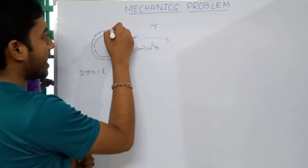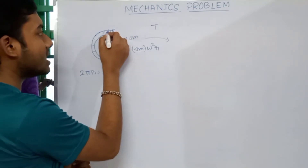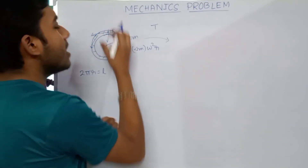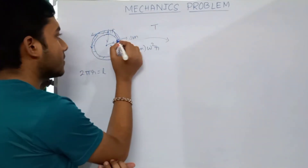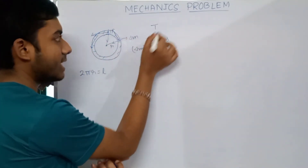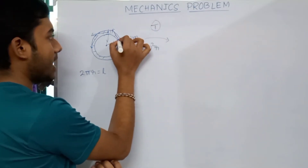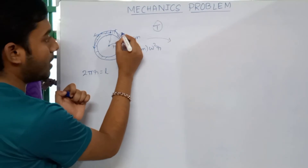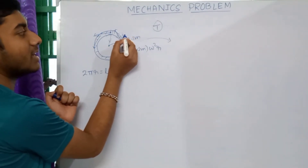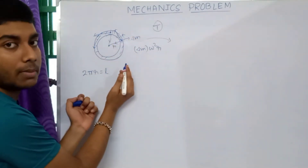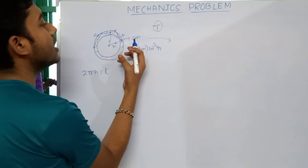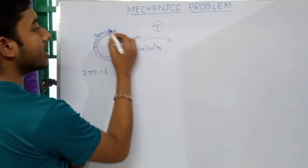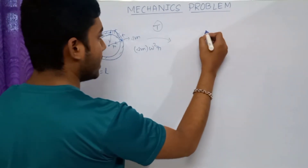The tension is directed tangentially because it is an intermolecular force. For this mass, the upper part of the string attracts the lower part, so the tension force is directed tangentially in that way.